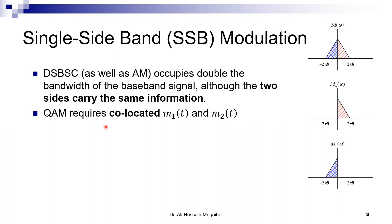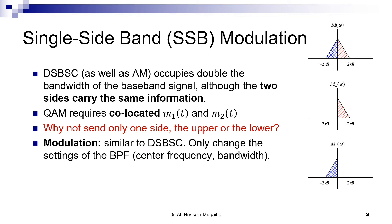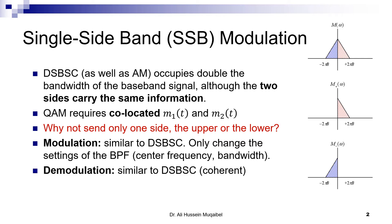We went into QAM — quadrature amplitude modulation — but the problem with QAM is that, while it can send two signals at bandwidth 2B (which means 1B per message), it requires co-located m1 and m2 at the same location and is very phase sensitive. Now, why not send only one side — the upper or the lower sideband? We call this single sideband: upper sideband or lower sideband. The modulation technique will be very similar to double sideband suppressed carrier, only we change the filter settings, and at the receiver we use similar coherent detection.